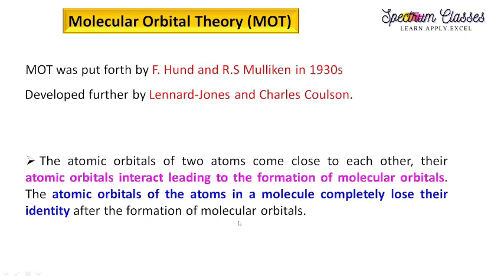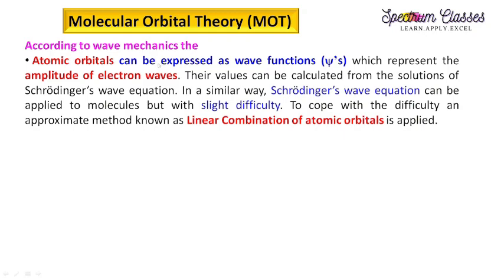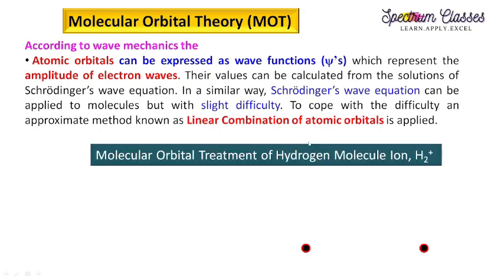According to wave mechanics, atomic orbitals can be expressed as wave functions representing the amplitude of electron waves. Their values can be calculated from solutions to the Schrödinger wave equation. Similarly, the Schrödinger wave equation can be applied to molecules, but with some difficulty — for systems with more than one electron it becomes very difficult. Therefore, an approximate method known as linear combination of atomic orbitals (LCAO) is used for the wave mechanical treatment.